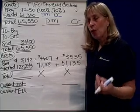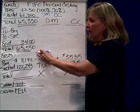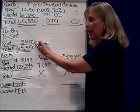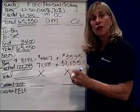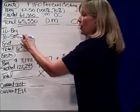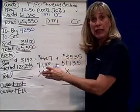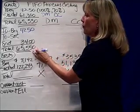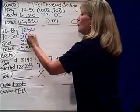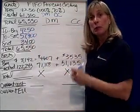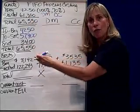What happened to those units? The only thing the problem tells us is that ending inventory is 3,400 units. So if I'm responsible for 65,550 units and I know that 3,400 units are still with me, the rest must have transferred out. Under FIFO, the first units in are the first units transferred out. So those 4,250 units in beginning inventory were completed and transferred out. The difference — the plug number — of 57,900 must be the units that were both started this period and transferred out of our production process. That's step one: account for your physical units.